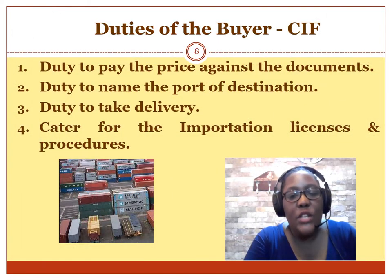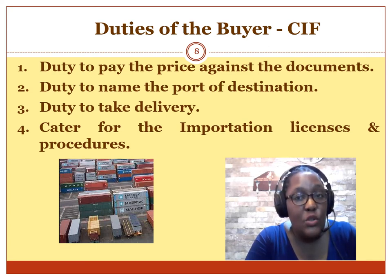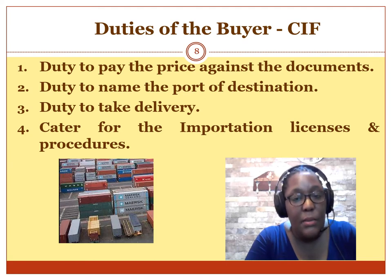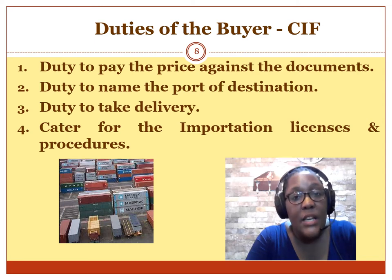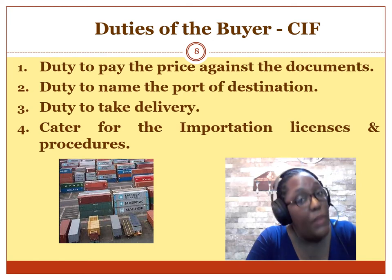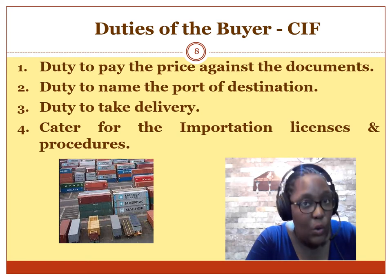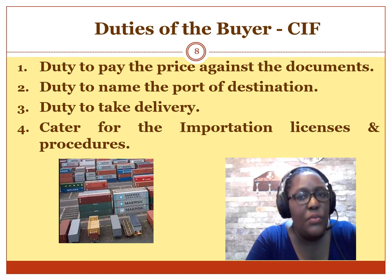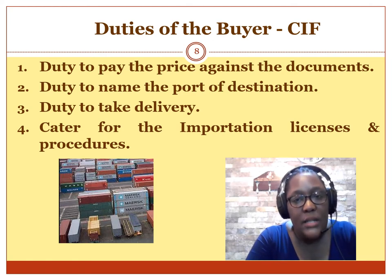Now the duties of the buyer: you must pay the CIF price — the total package — as soon as you receive the documents, you're required to initiate payment to the seller. You must name the port of destination — CIF Mombasa, CIF Ginja, CIF Kampala — stating where the goods must be delivered. The buyer must take physical delivery once the goods arrive at Mombasa. The buyer must also take delivery of the documents, since delivery of documents is delivery of goods in law. Finally, the buyer must cater for all importation procedures and licenses, including any importation stamp duty — that is the buyer's cost.